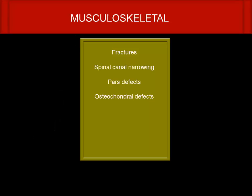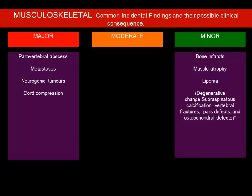For the musculoskeletal system, look for incidental fractures, facet joint disease, lytic defects, osteochondral defects, and spinal canal narrowing. A major finding would be a paravertebral abscess, metastasis, or an incidental finding in a patient coming for benign pathology — if you pick up a bone metastasis, that is a major finding. Also, cord compression post-therapy must be reported to the clinical team.